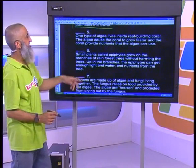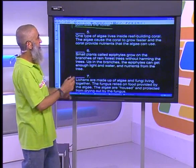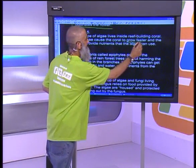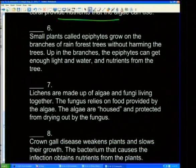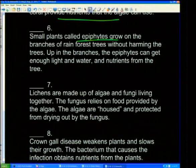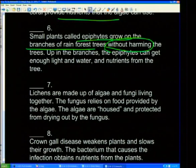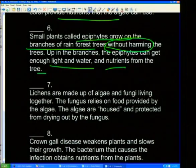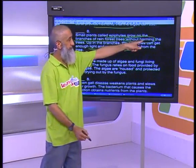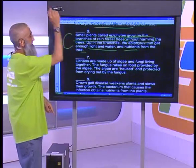One type of algae lives inside the reef-building coral. The algae causes the coral to grow faster, and the coral provides nutrients that the algae can use — both benefiting: mutualism. Small plants called epiphytes grow on the branches of rainforest trees without harming them. Up in the branches, the epiphytes get enough light, water, and nutrients from the tree, but the tree gets no benefit from the epiphytes — neither harmed nor benefiting: commensalism.